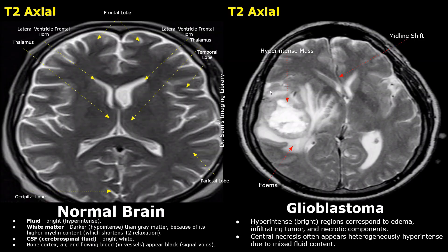The central necrosis often appears heterogeneously hyper-intense due to mixed fluid content. This is the mass and it is surrounded by vasogenic edema. This is the edema.